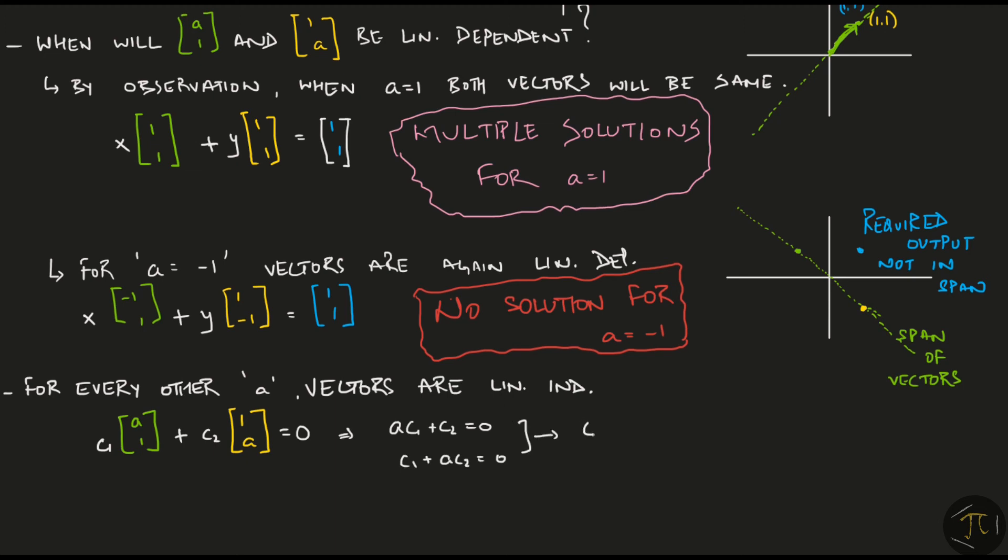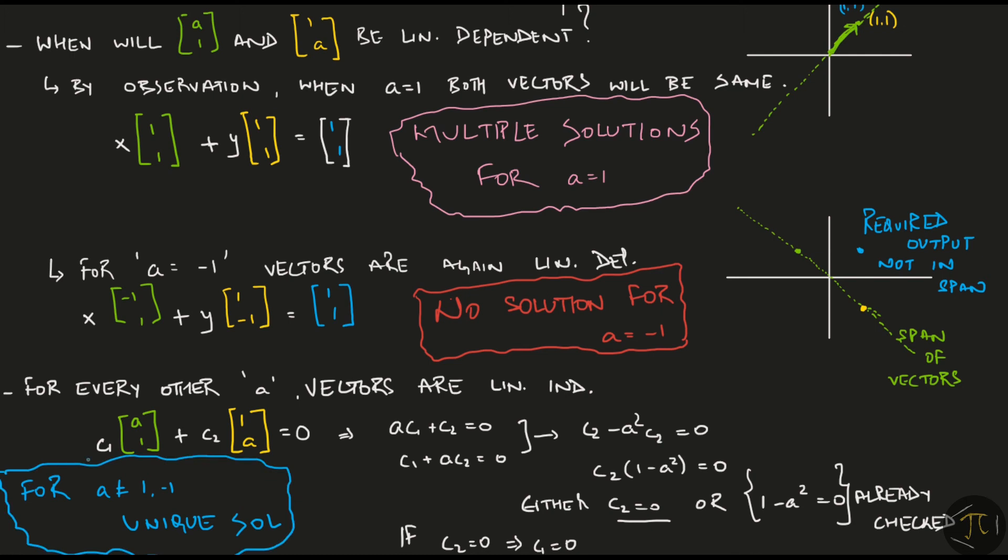and solving for them gives me c2 times 1 minus a squared equal to 0. Now either c2 is 0 or 1 minus a squared is 0. We have already checked what happens when a is plus or minus 1. Now if c2 is equal to 0, it implies that c1 is also 0. So whenever a is not 1 or minus 1, the vectors are linearly independent and we must get a unique solution.